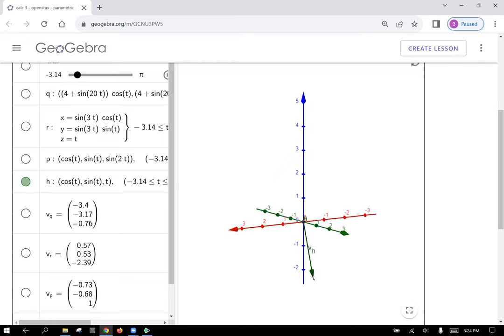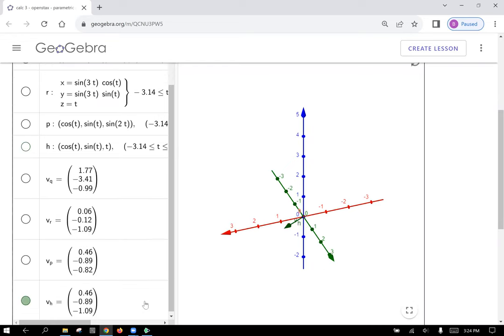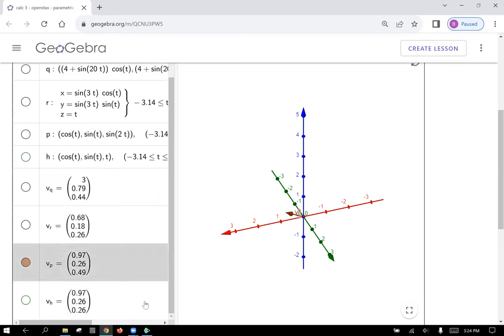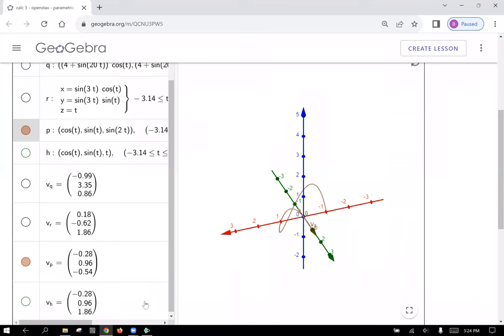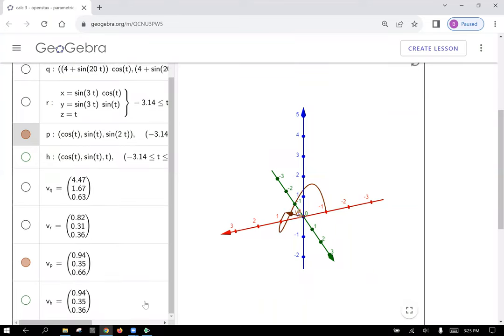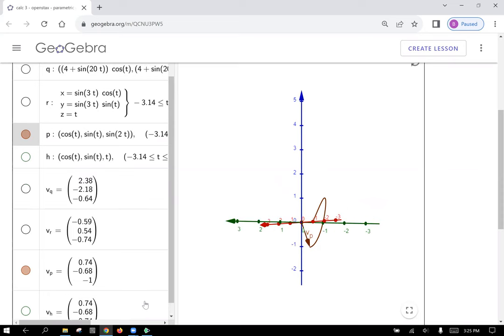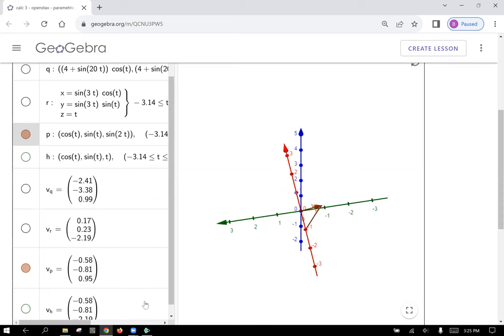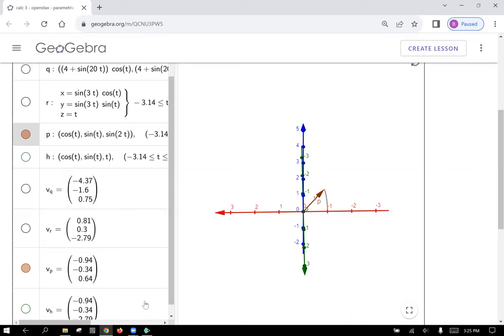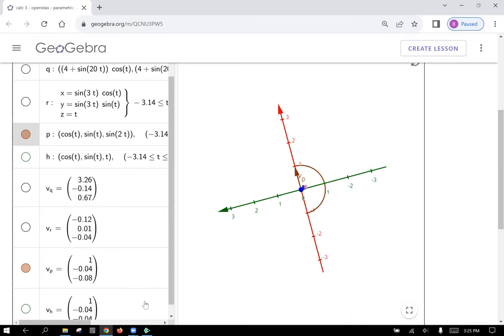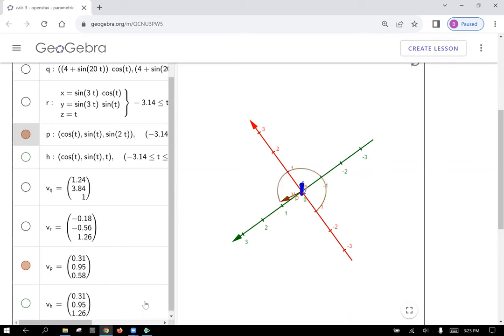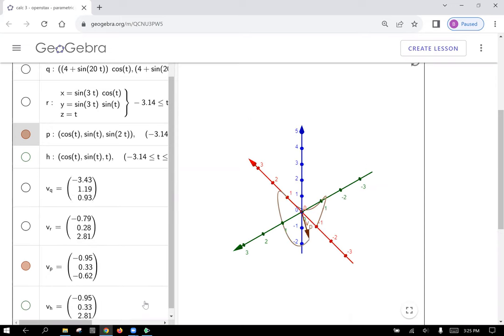Now let's look at one of the other ones. We'll turn h off, and let's look at p for fun here. Check that out. This isn't wrapping around a cylinder. This is making some kind of a little curve being traced out in space here as time passes. From above, it's still just going around the unit circle, but we're tracing out a very different curve in space.